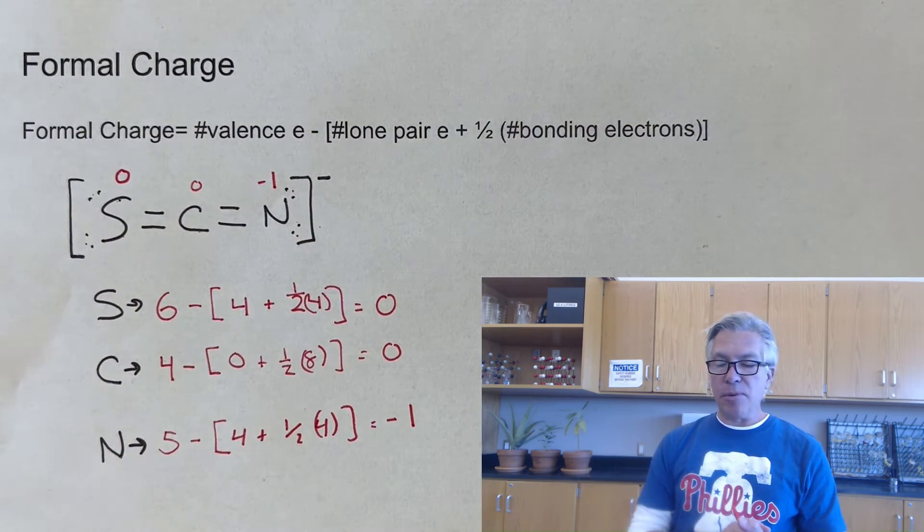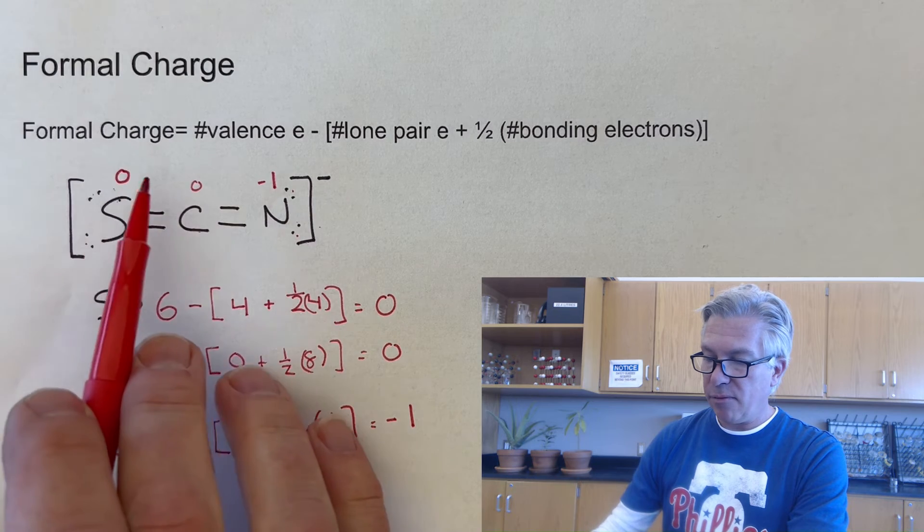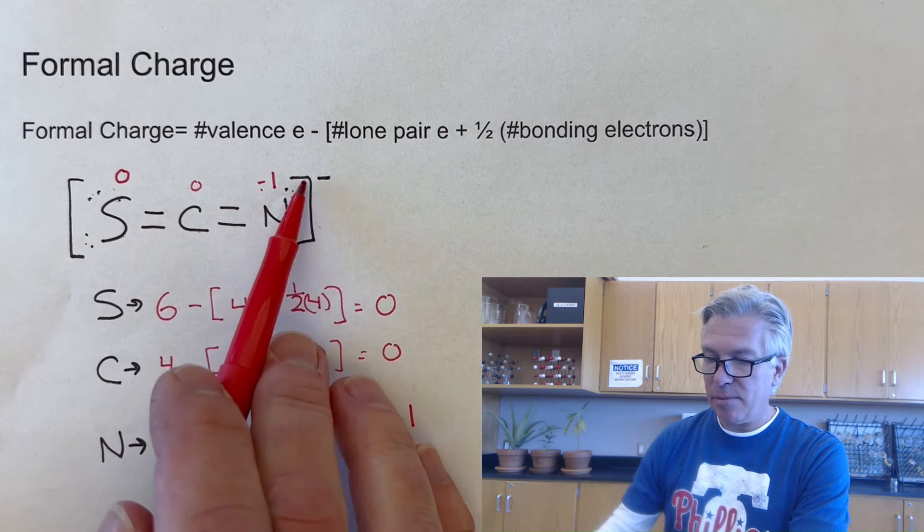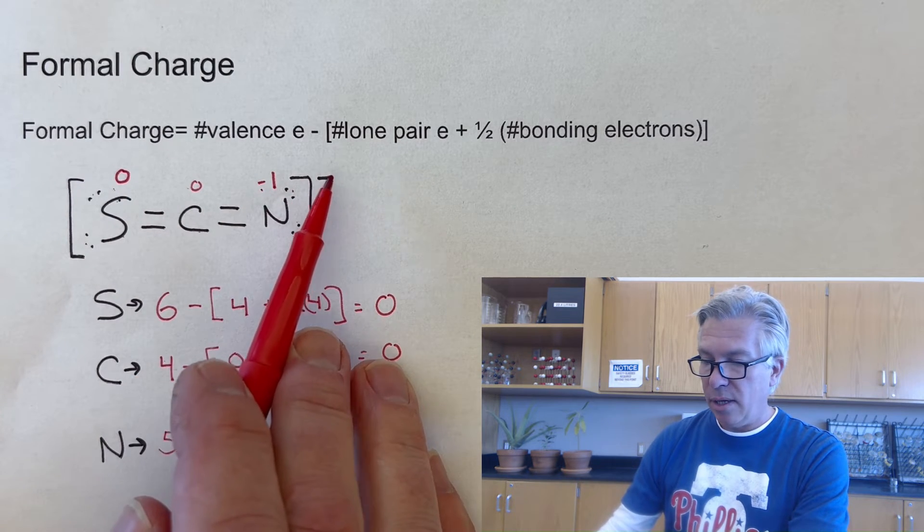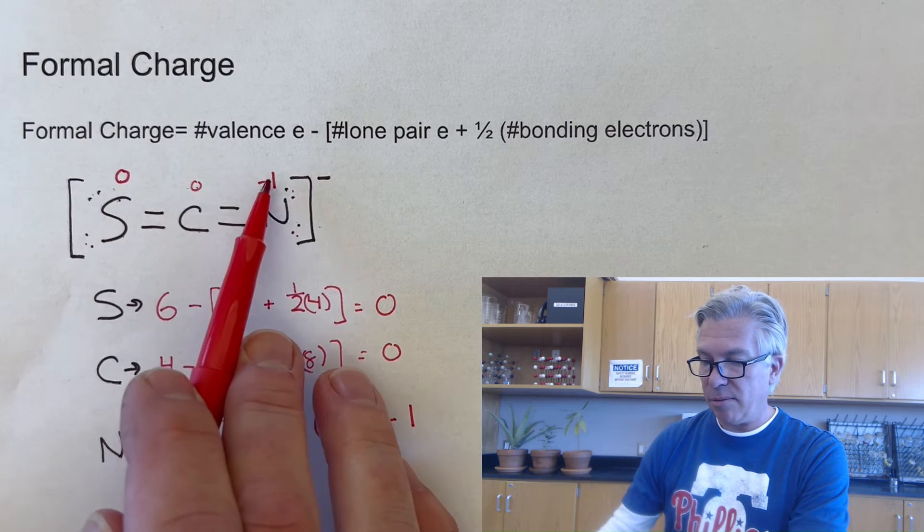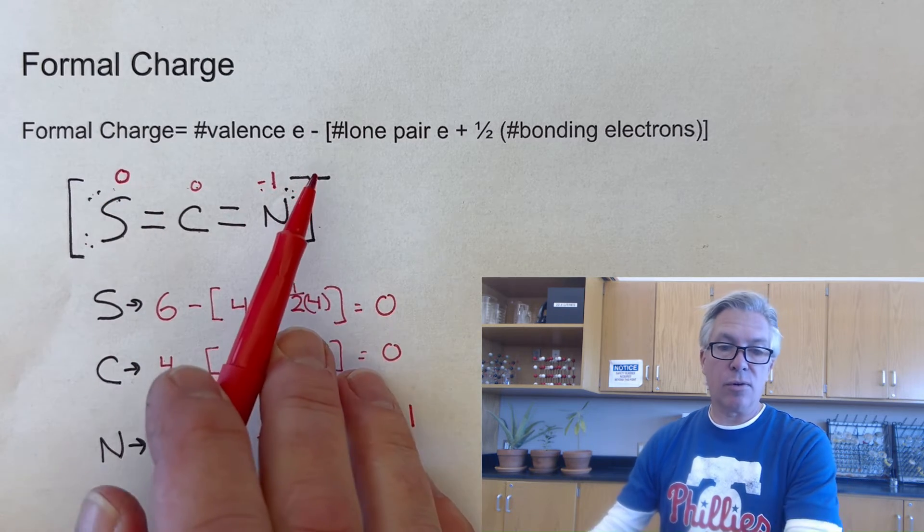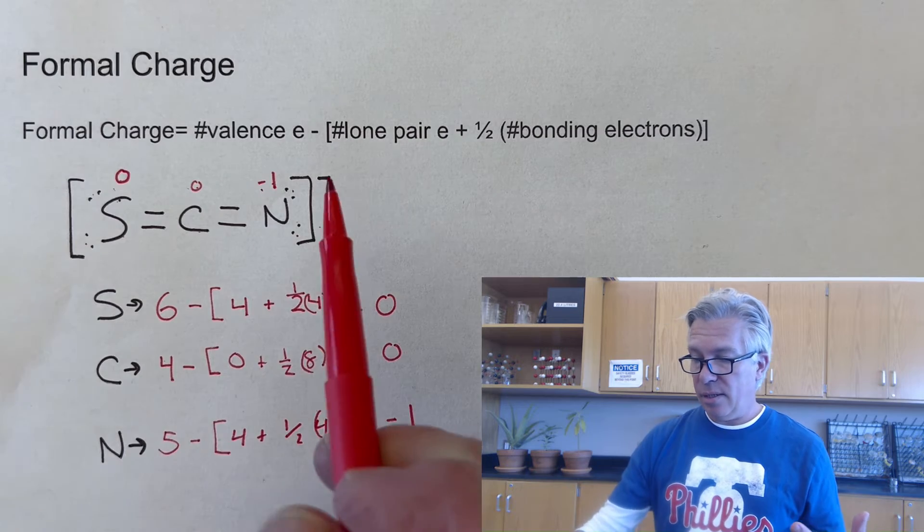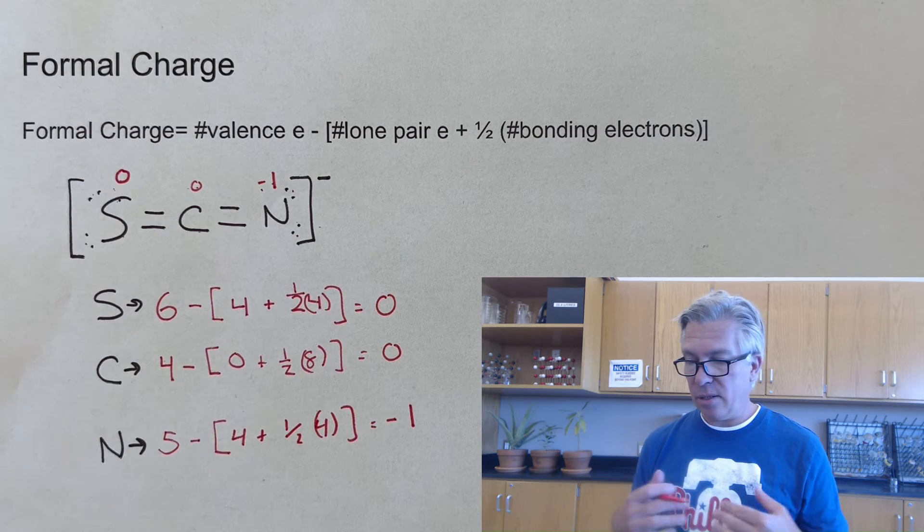One way to check that you're doing these appropriately is that the sum of the formal charges has to add up to the overall charge on your molecule. So zero plus zero plus minus one does give me the minus one overall that this ion would have. And so I can be reasonably sure that that is correct.